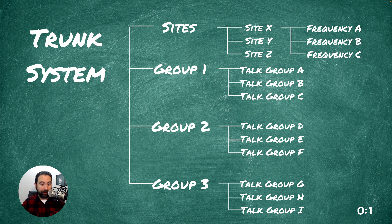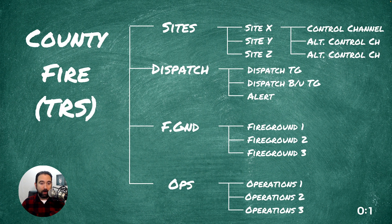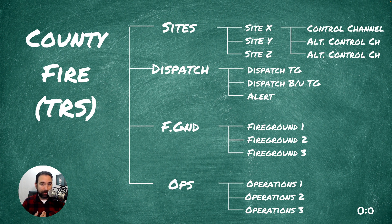Let's put a real-world example here. We have a County Trunk Radio System. Under the sites, we have sites X, Y, and Z. Site X has a control channel and two alternate control channels. And of course, we have groups for Dispatch, Fire Ground, and Operations. And this is how you program your DMA scanner in its simplest form.